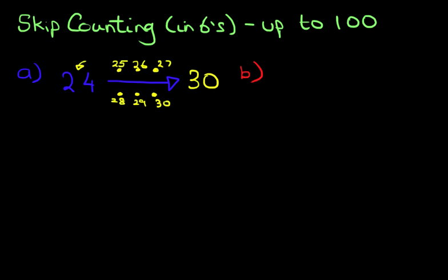Let's have a look at our second example. This time we've got number 66. Now what number comes after 66 if we are counting in sixes? Using the same method, we're going to put six dots. One, two, three, four, five, and six. Our starting point is number 66. Let's start counting.